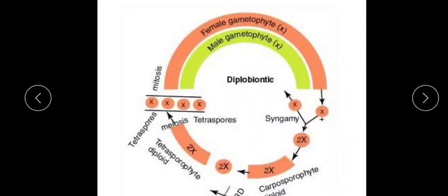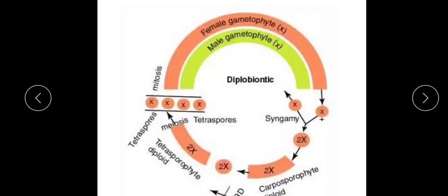The diploid spores germinate and form the tetrasporophyte, which is the second independent diploid phase. This tetrasporophyte produces tetrasporangia, and inside them, reduction division (meiosis) occurs, producing haploid tetraspores. These tetraspores germinate and produce the male and female gametophytes, completing the diplobiontic life cycle.